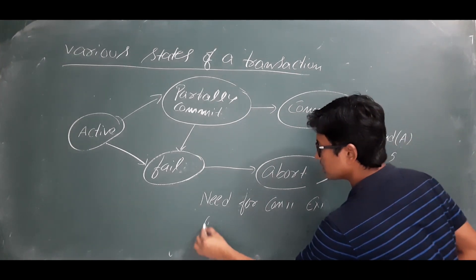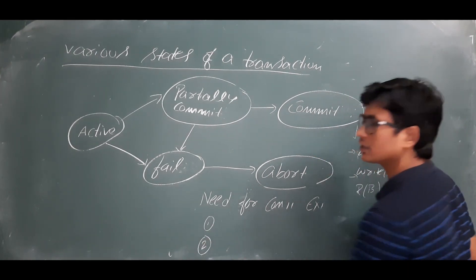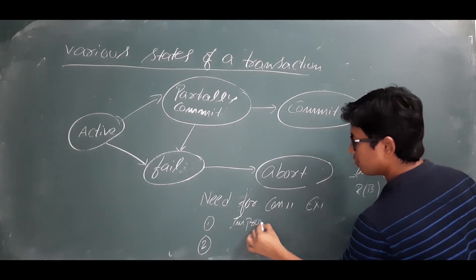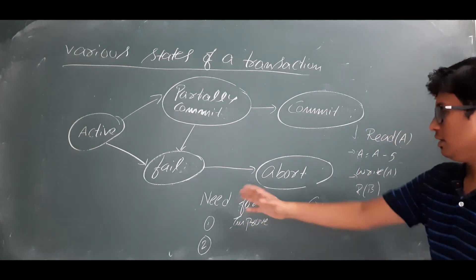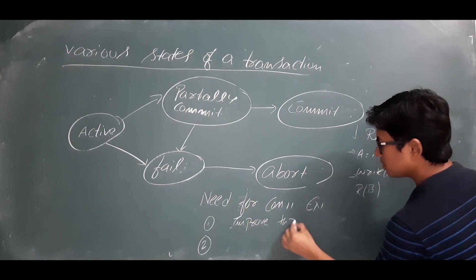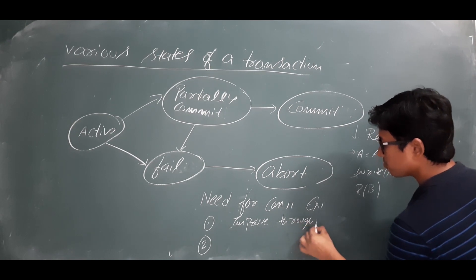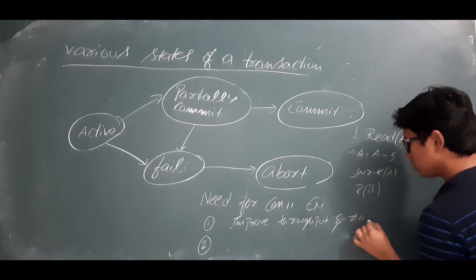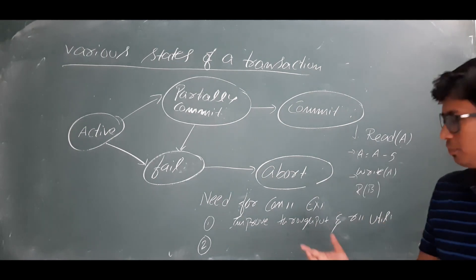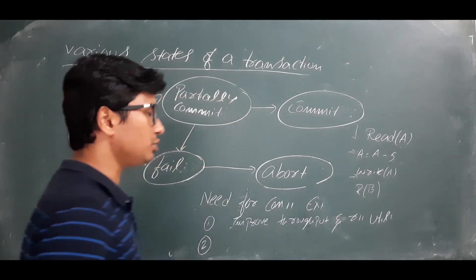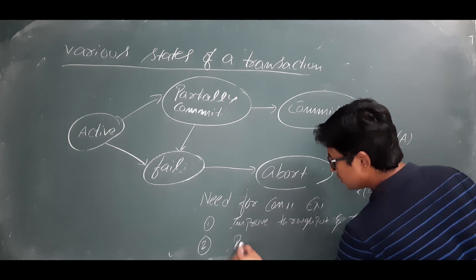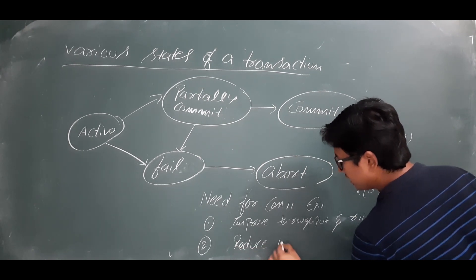The first advantage of executing transactions in a concurrent way is that it improves throughput and resource utilization — we can improve the throughput of the system and use resources in a better way. The second advantage is that it reduces waiting time.